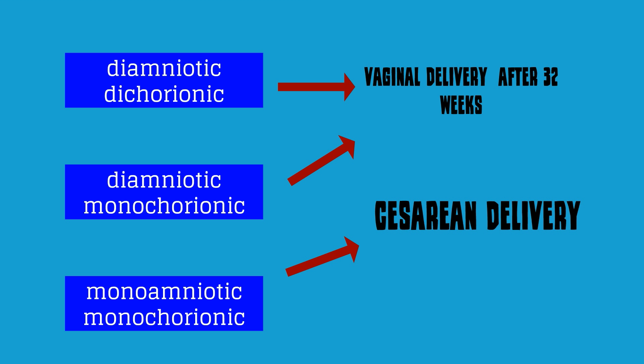In summary, MoMo pregnancies are delivered by cesarean delivery. Di-mo and di-di pregnancies can be delivered by vaginal delivery if the presenting twin is cephalic. However, since all twin pregnancies are at increased risk of cesarean delivery, some patients and some clinicians may choose to proceed with cesarean delivery with all twin gestations regardless of chorionicity and presentation.